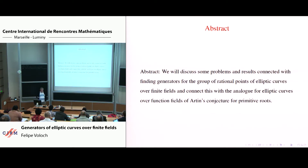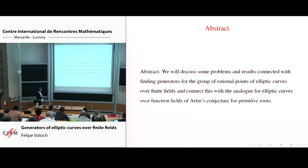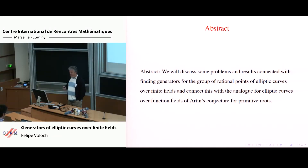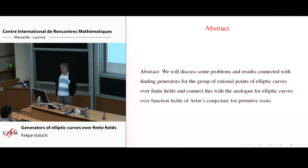Here's the abstract I submitted to the organizers. We're going to discuss questions about generators for the group of rational points of elliptic curves over finite fields. We're going to connect this with the analog of the function field of Atkin's conjecture. We'll also talk about a conjecture of Punen about the order of points on subvarieties of abelian varieties over finite fields, which will play a role later.